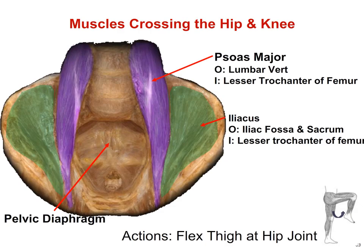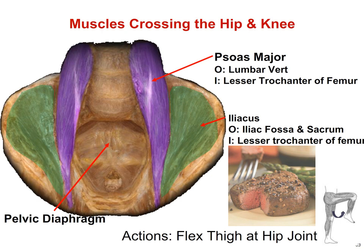Our next muscles are flexors of the hip, located deep inside the body. The psoas major originates on the lumbar vertebrae and inserts on the lesser trochanter of the femur. The iliacus is found in the iliac fossa and also inserts on the lesser trochanter. Both the psoas major and iliacus help to flex the thigh at the hip joint, and collectively they are known as the iliopsoas. Interestingly, the psoas is the same muscle found in beef tenderloin used to make filet mignon.